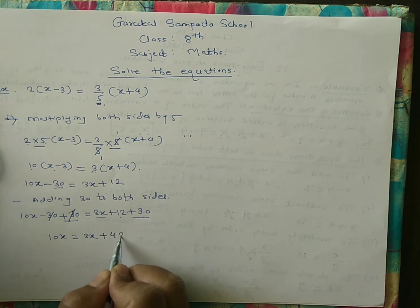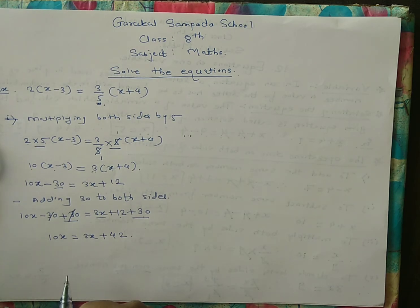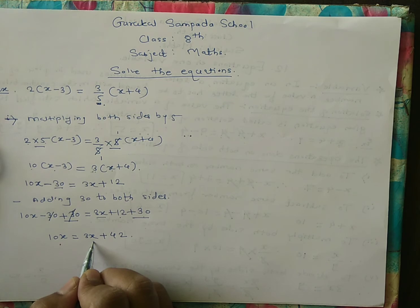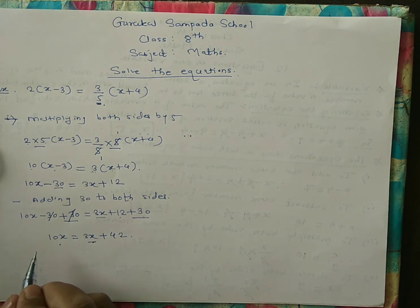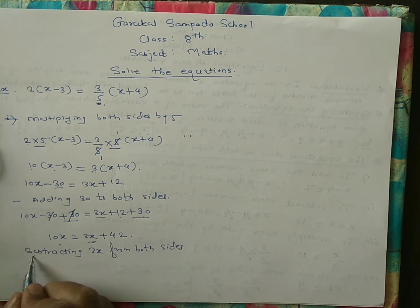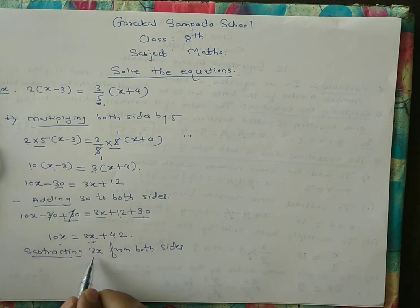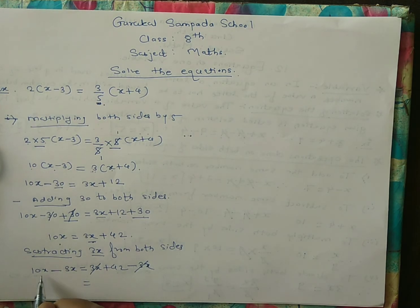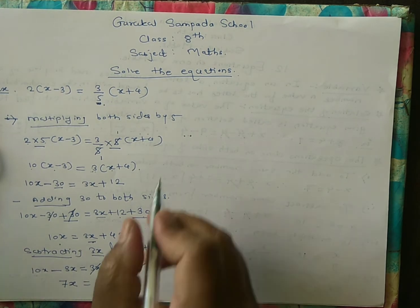Now we need to cancel the term 3x. The operation is subtracting 3x from both sides. On the left, 10x minus 3x gives 7x. On the right, plus 3x minus 3x becomes 0, leaving only 42. So 7x is equal to 42.